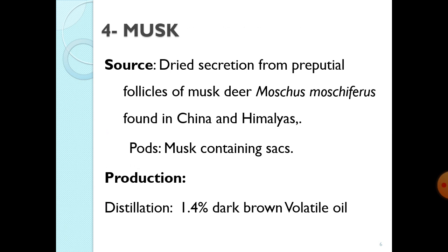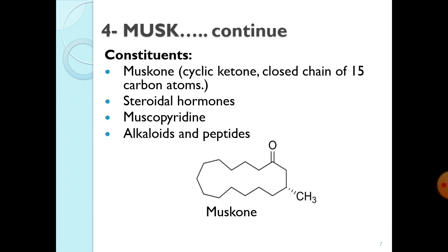Musk contains 1.4% dark brown volatile oil. The constituent responsible for its strong odour is called muskone. Muskone is a cyclic ketone — in the structure you will see oxygen present with a benzene ring, and it is a closed chain of 15 carbon atoms. Along with muskone, it also contains steroidal hormones, musk pyridine — which contributes to its strong fragrance — and some alkaloidal compounds and peptides.